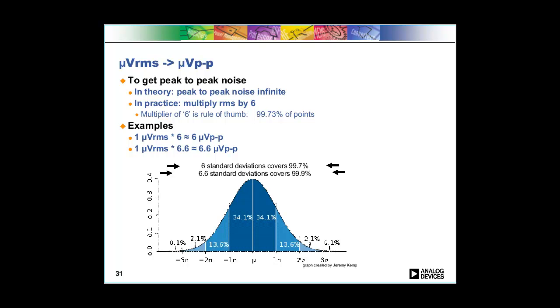In theory your peak-to-peak noise is infinite because you're looking at the outliers, and the longer that you look at outliers the bigger the min and max will be. However, in practice, typically the rule of thumb is to multiply the RMS by six to get the peak-to-peak, and if you do that you'll get 99.7% of the points.